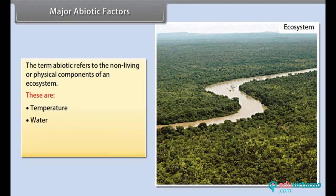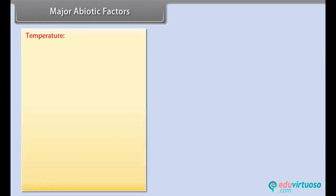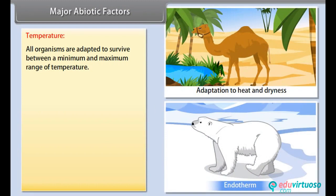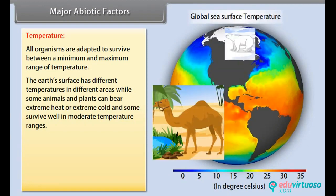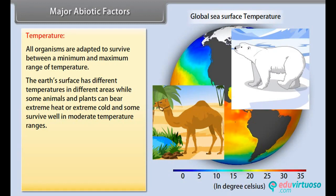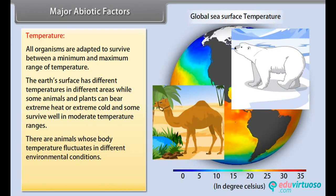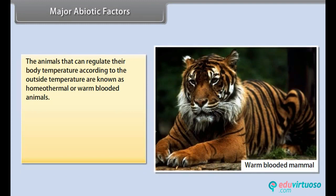Major abiotic factors: The term abiotic refers to the non-living or physical components of an ecosystem. These are temperature, water, light, and soil. Temperature: All organisms are adapted to survive between a minimum and maximum range of temperature. The earth's surface has different temperatures in different areas. Some animals and plants can bear extreme heat or extreme cold, while some survive well in moderate temperature ranges. Animals like fishes and frogs are cold-blooded. Animals that can regulate their body temperature according to the outside temperature are known as homeothermal or warm-blooded animals. Temperature also plays a key role in geographical processes, as differences in oceanic water temperature combined with winds and the earth's rotation produce oceanic currents.